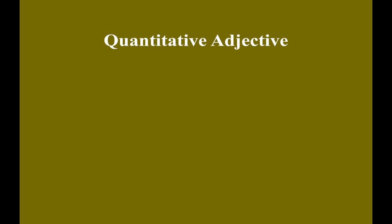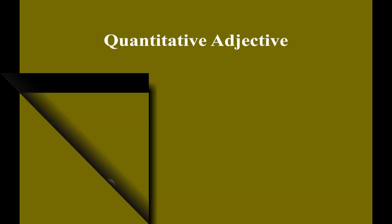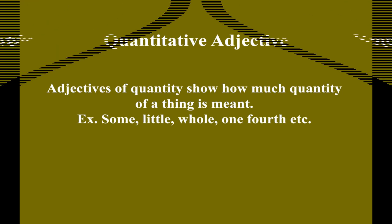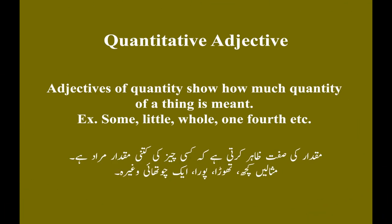Quantitative adjective. Adjectives of quantity show how much quantity of a thing is meant. Examples: some, little, whole, one-fourth, etc. Miqdaar ki sifti zahir kerti hai ke kishi chiz ki kitnay miqdaar murad hai. Musali: kuch, thoda, pura, ek chuthai, baghira.